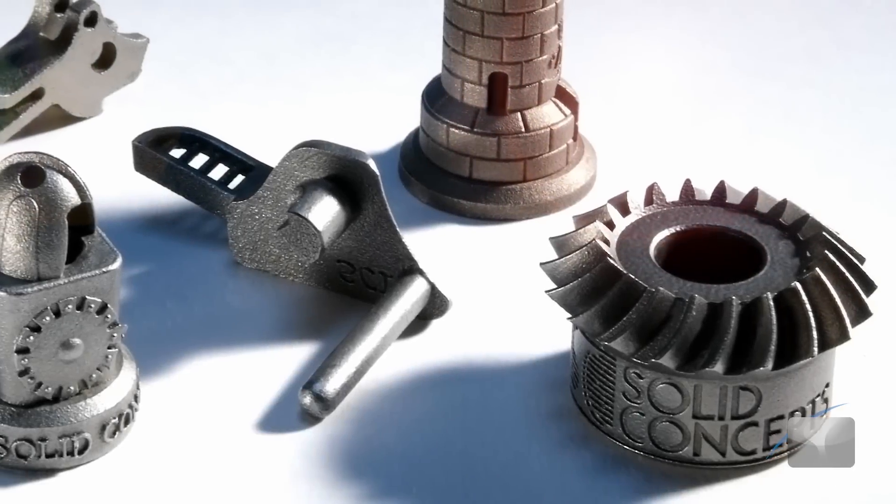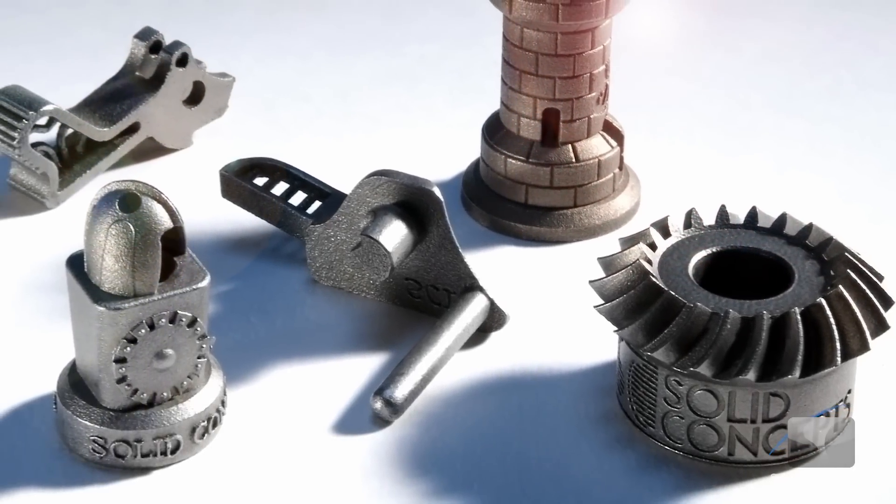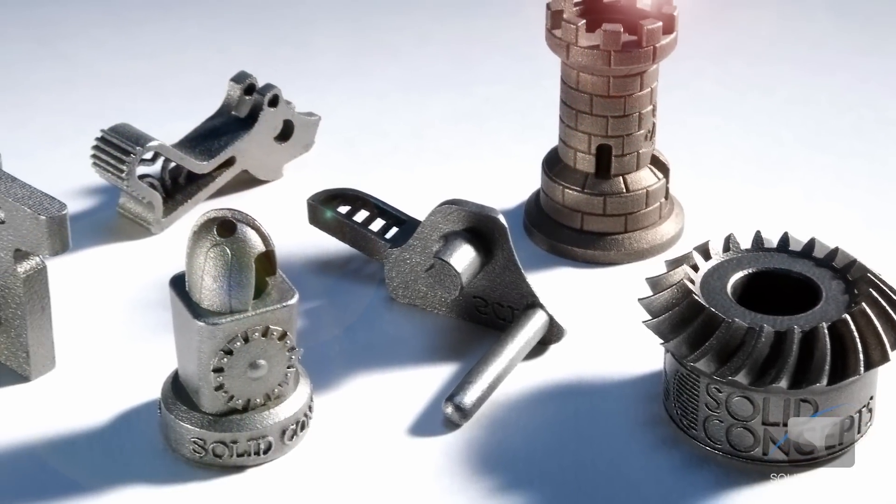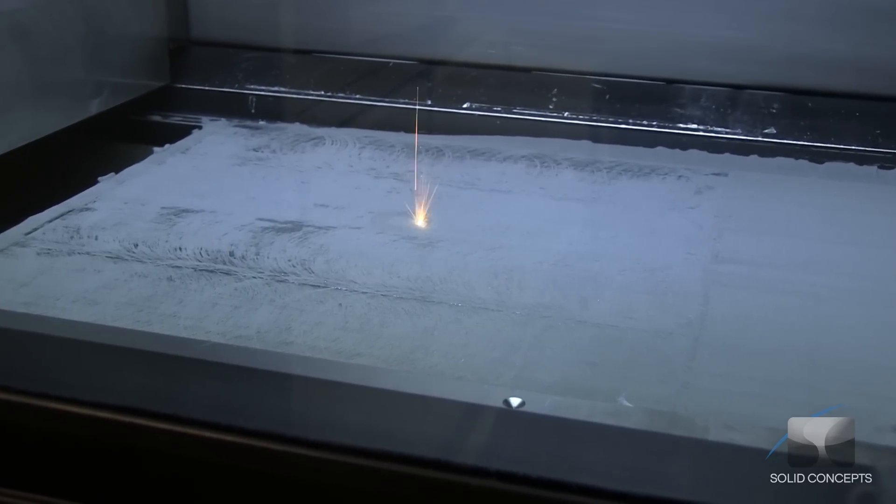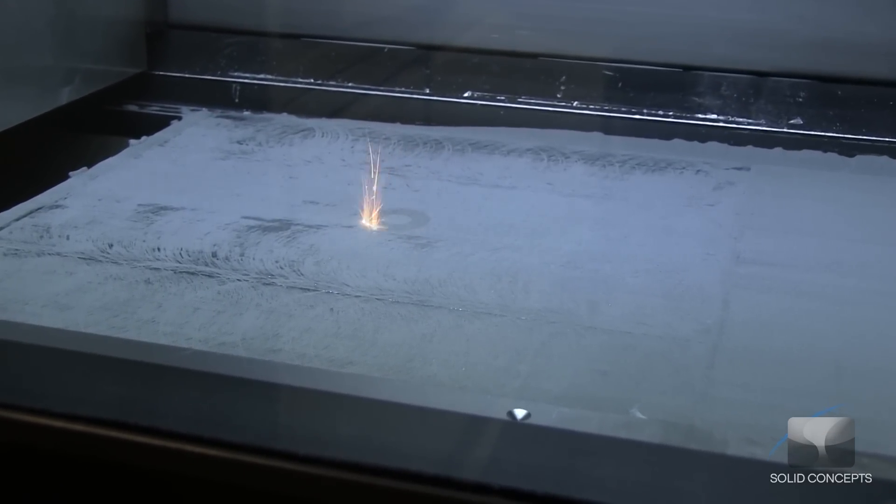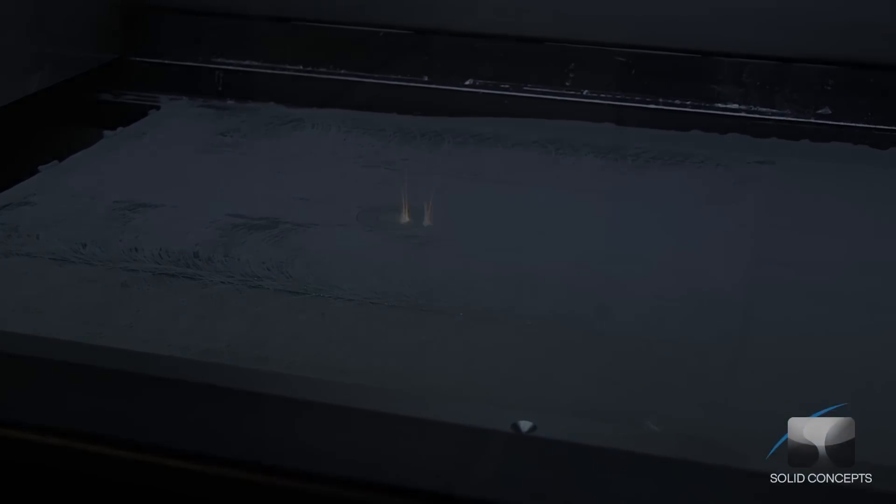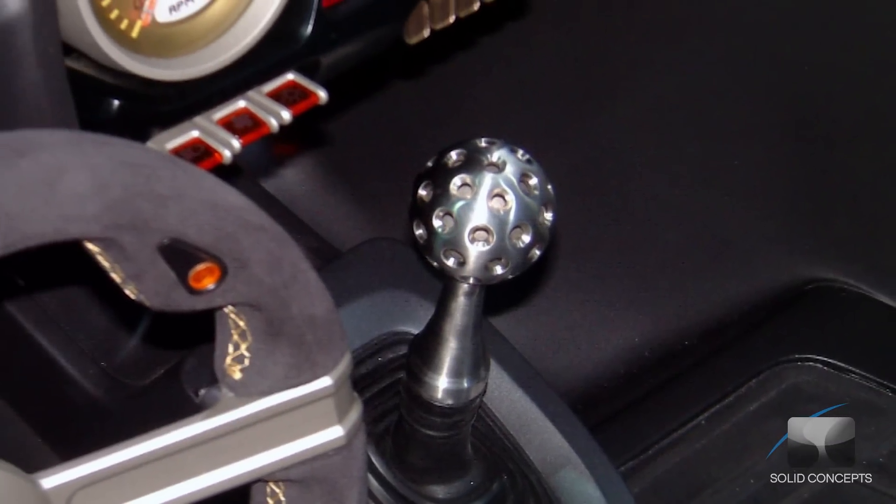DMLS utilizes a variety of metal and alloy materials such as stainless steel, cobalt chrome, and Inconel to create strong, durable parts and prototypes. DMLS is an excellent choice for functional metal prototypes, high temperature applications, and end-use parts.